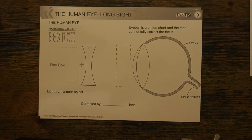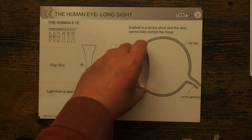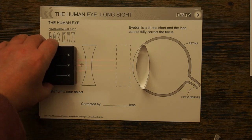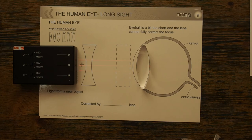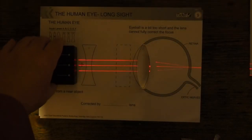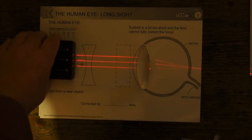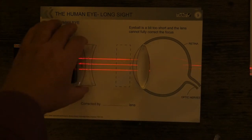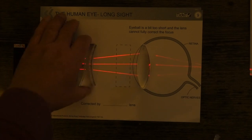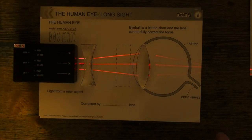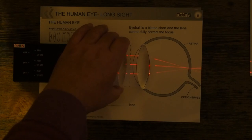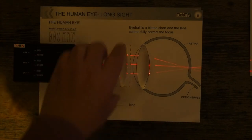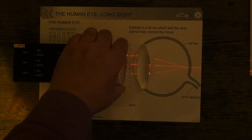If on the other hand the eyeball is a bit too short and the lens cannot fully correct the focus, things are a little bit more complicated. If I put my lens back in, the point of focus is slightly beyond the retina. To correct this I need two lenses: this double concave lens which spreads the light out, and then a convex lens to collapse it back in again and make it converge.